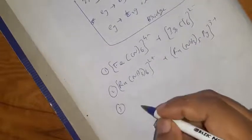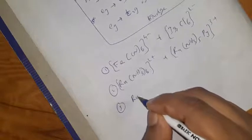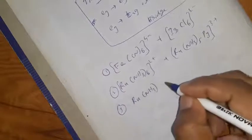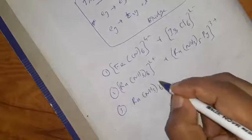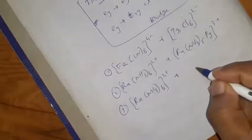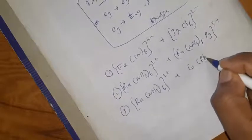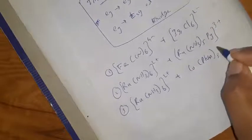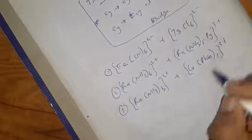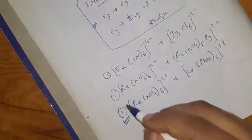The third example is again a Ruthenium complex: Ru(NH3)6²⁺ plus Cobalt(III) complex. This is an exception case. Thank you.